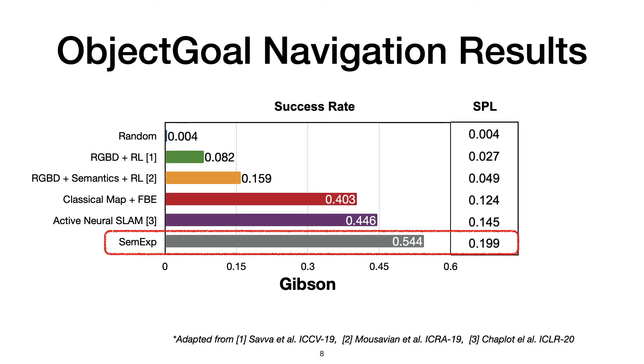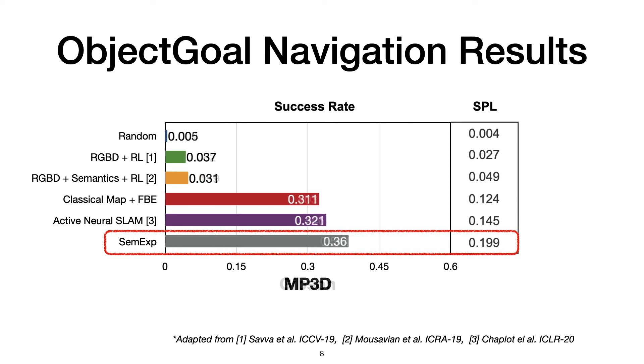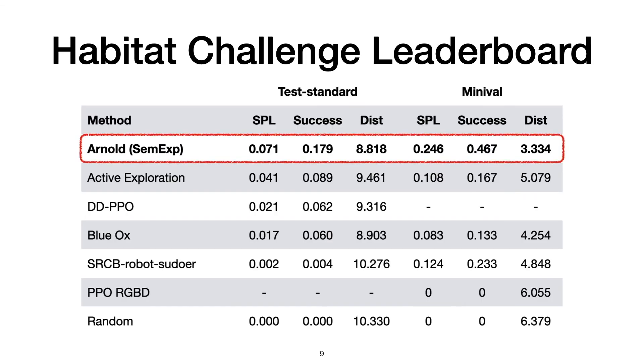We compare our model with four different baselines, two based on end-to-end RL and two based on modular navigation. Results on two datasets, Gibson and Matterport 3D, show that our model outperforms all the baselines by a large margin in terms of both success rate and SPL. Our submission based on the SemExp model is also leading the Habitat Challenge leaderboard for the object navigation task.